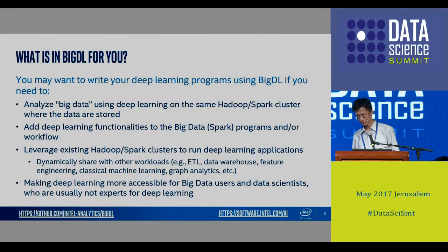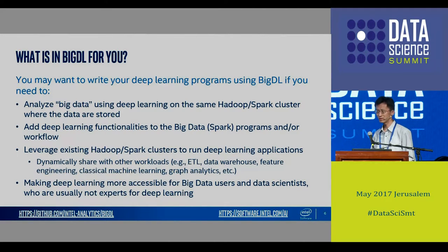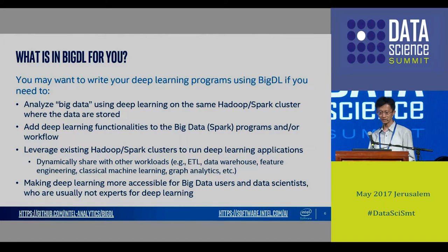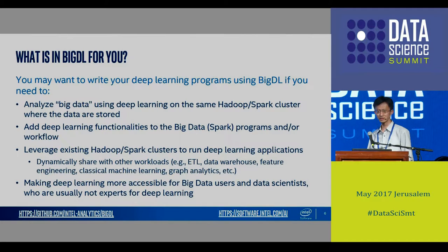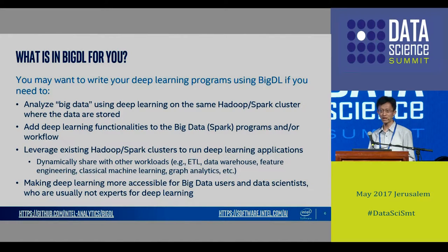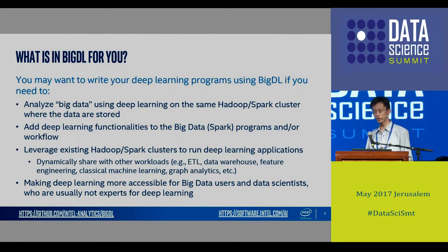Why should you choose BigDL, since there are a lot of existing frameworks for deep learning? One scenario is we want to build the deep learning system on an existing big data system — the data is already in Spark and the Hadoop ecosystem. That means we don't need to change storage or move data. We use Spark to move the computing to the data, which is what Hadoop and Spark already do.